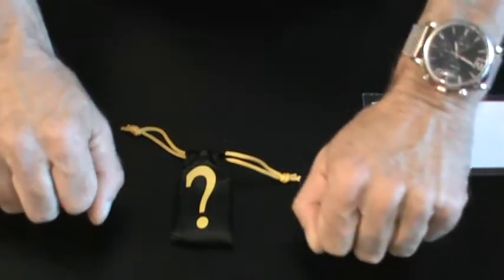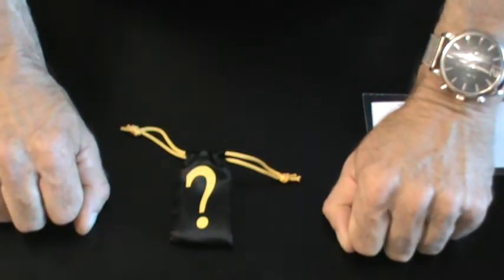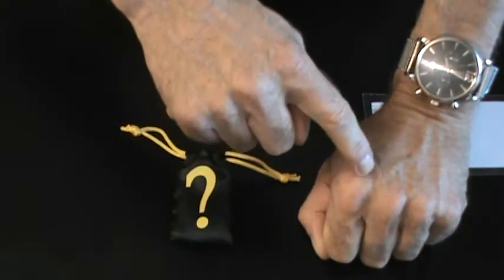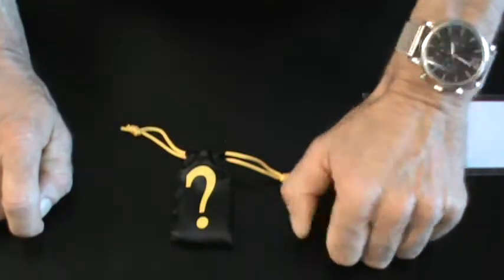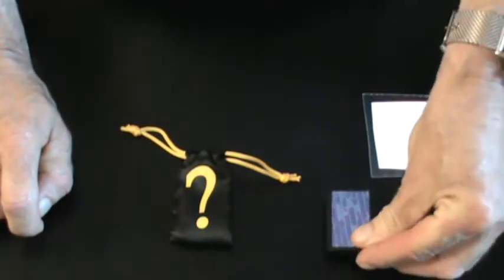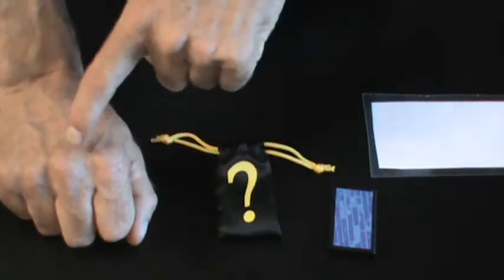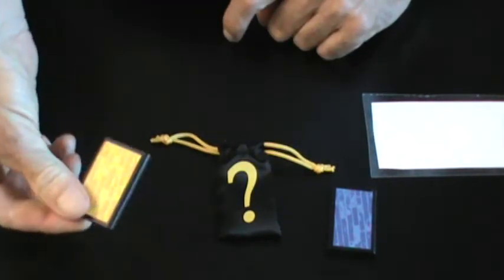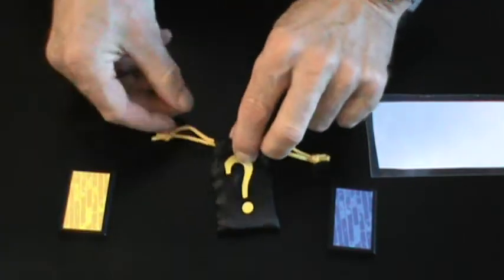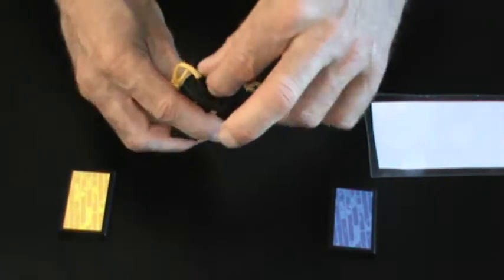You're getting a sense that the red block is not in that hand. They reveal. Yup, you were right. Now the red block, you don't think it's in this hand either. They reveal. It's not. You knew the red block would be in the bag.